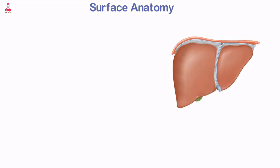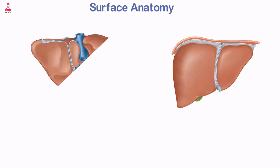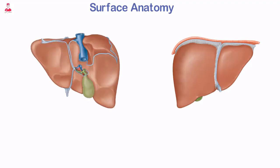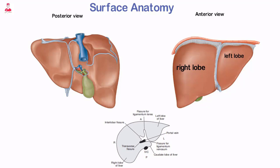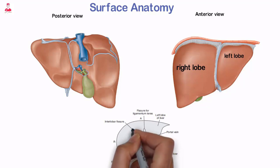The liver can be divided into lobes according to surface anatomy or into segments according to vascular supply. The four lobes commonly used for reference based on surface anatomy are the left, right, caudate, and quadrate. The left lobe is the most anterior of the liver lobes, extending across the midline. The right lobe is the largest of the four lobes and is separated from the left lobe by the interlobar fissure.